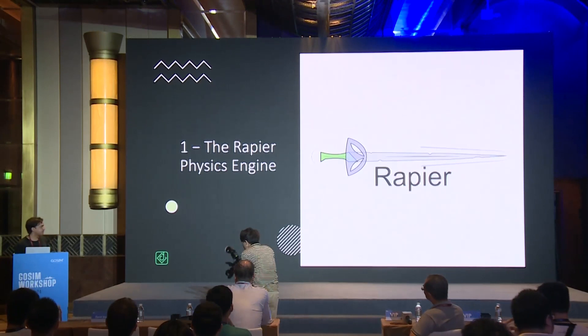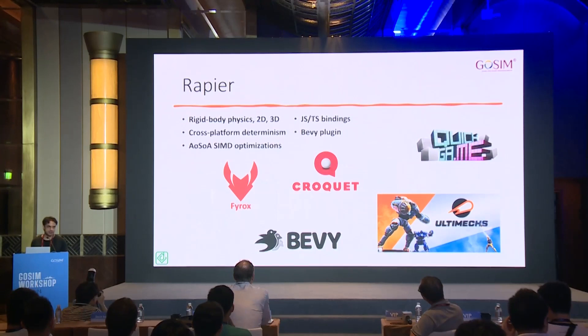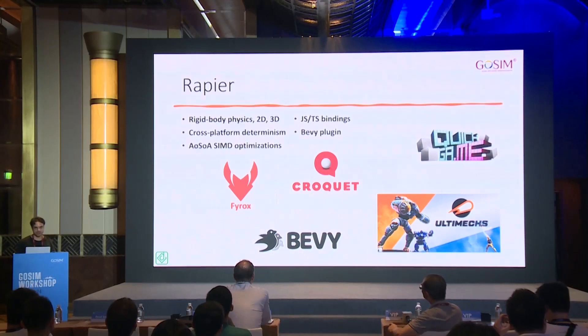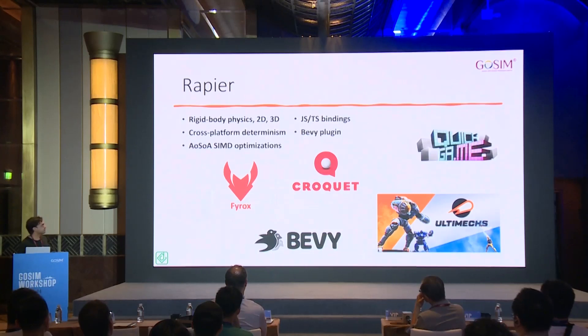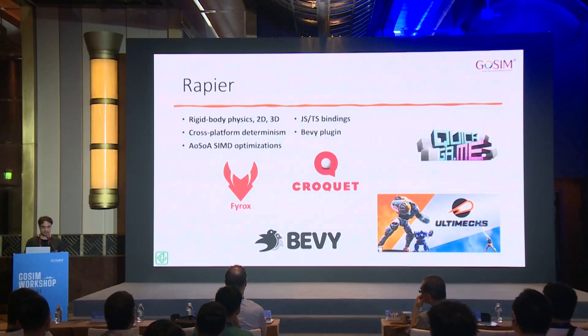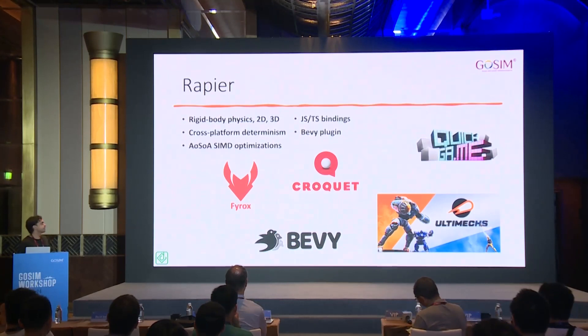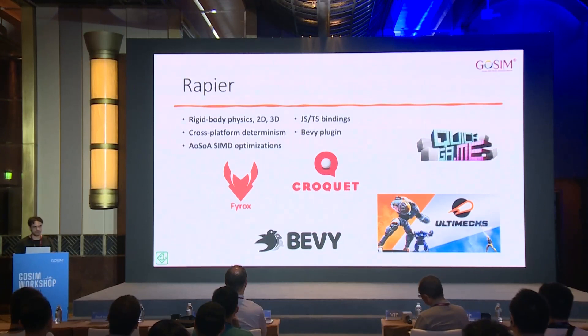Rapier is a 2D and 3D physics engine. By 2D and 3D I mean that it has two versions, one for 2D and one for 3D, but they both rely on the same code base — which means when I have to fix a bug or improve performance, I only have one code base to modify. And it's real 2D physics with actual 2D vectors and matrices, not just a 3D version with constraints on one axis, so you do gain extra performance by using 2D.